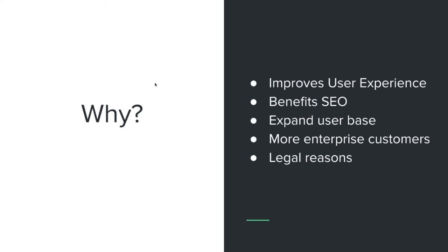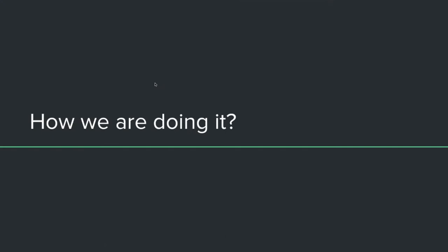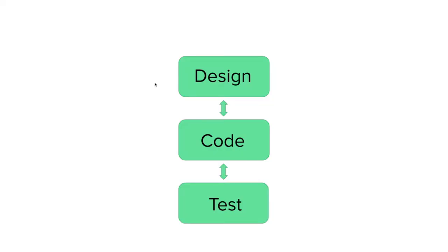Now we know why we want to make our products accessible. The next question is: how? Normally when you work on a product website or app, the process is you get the design, write code, test it, and go back and forth. Before we start fixing our existing products and building new products, we wanted to set up a toolchain so we can catch issues as we fix them — we don't want to make things worse by just throwing aria attributes everywhere. We wanted to set up the toolchain first so when we start fixing problems, we do it the right way.